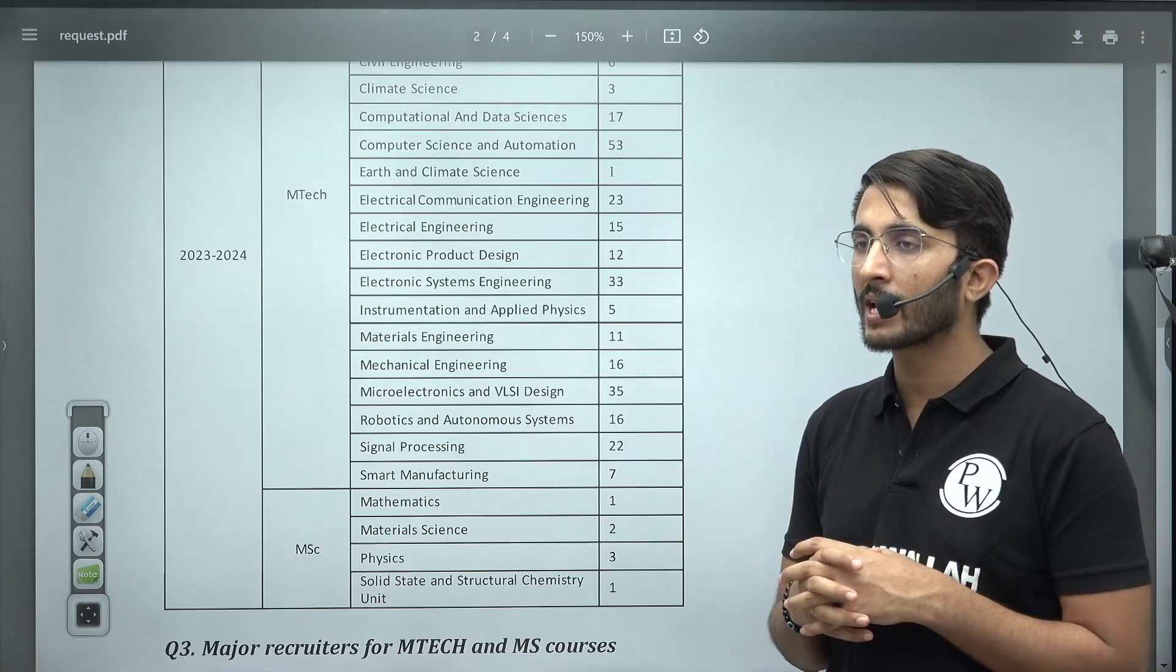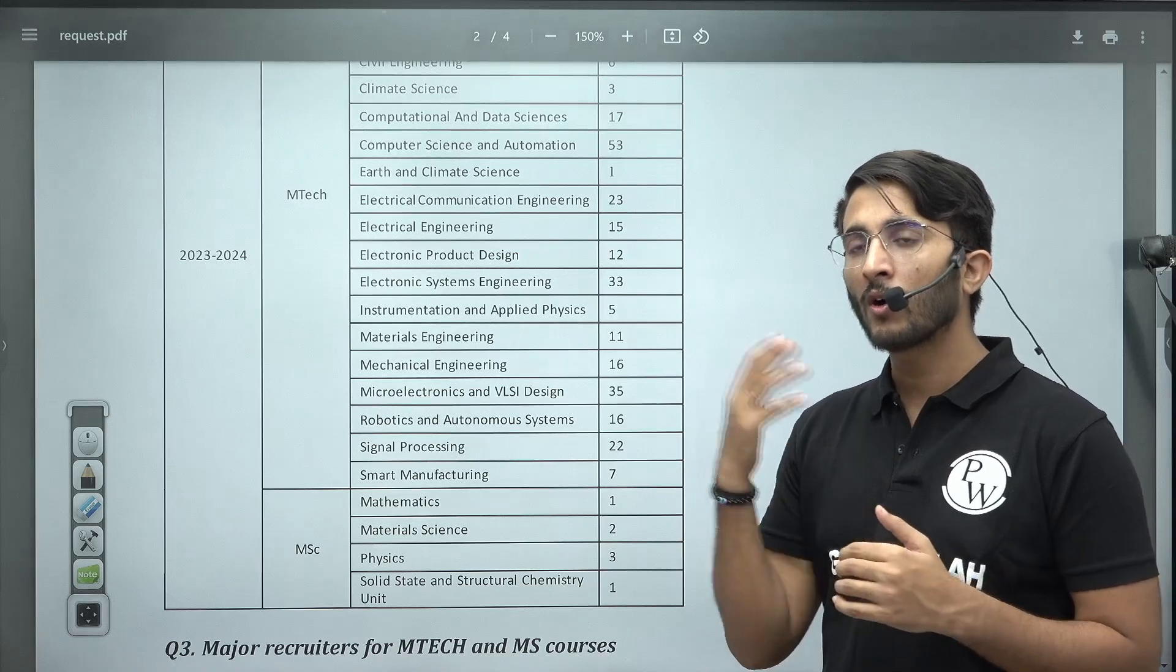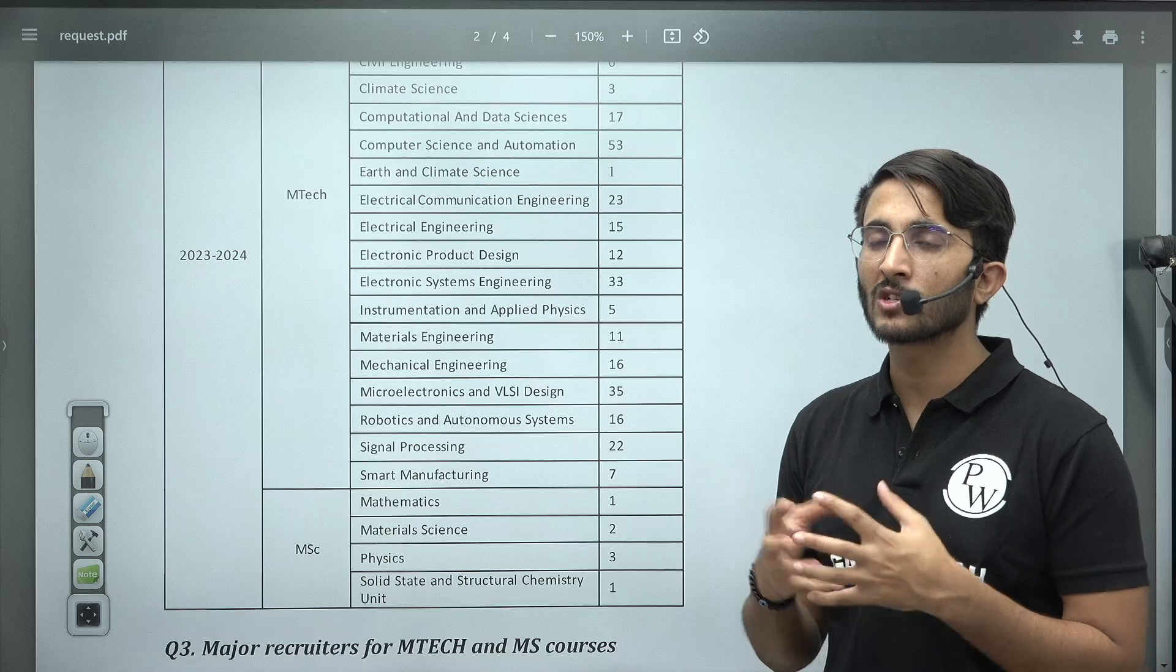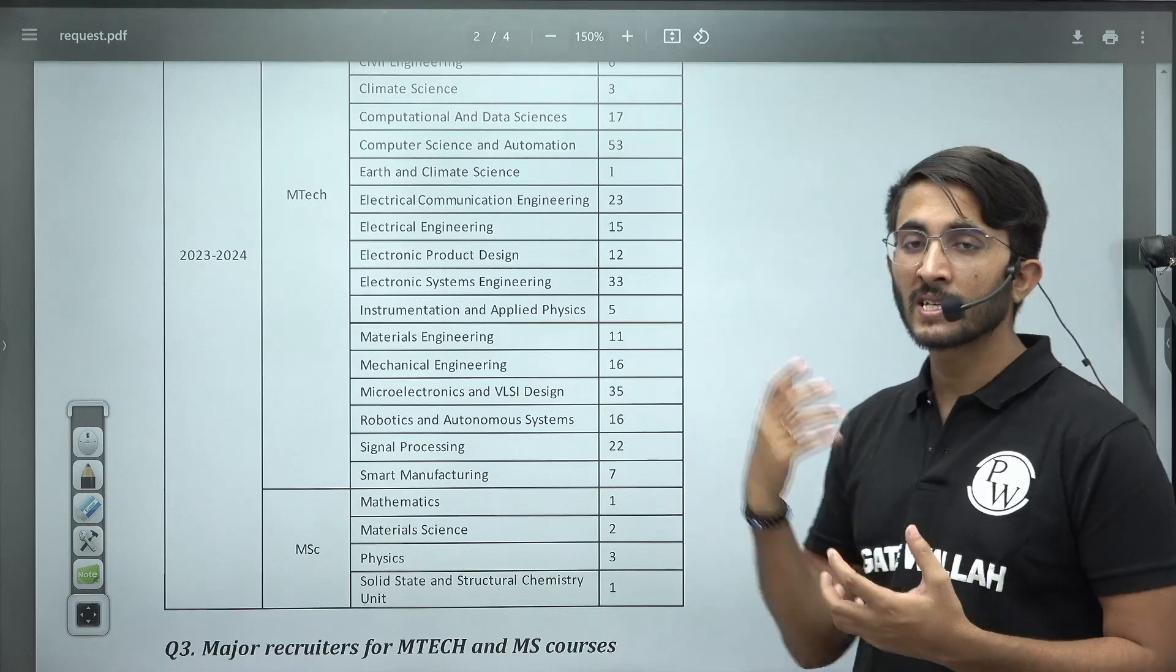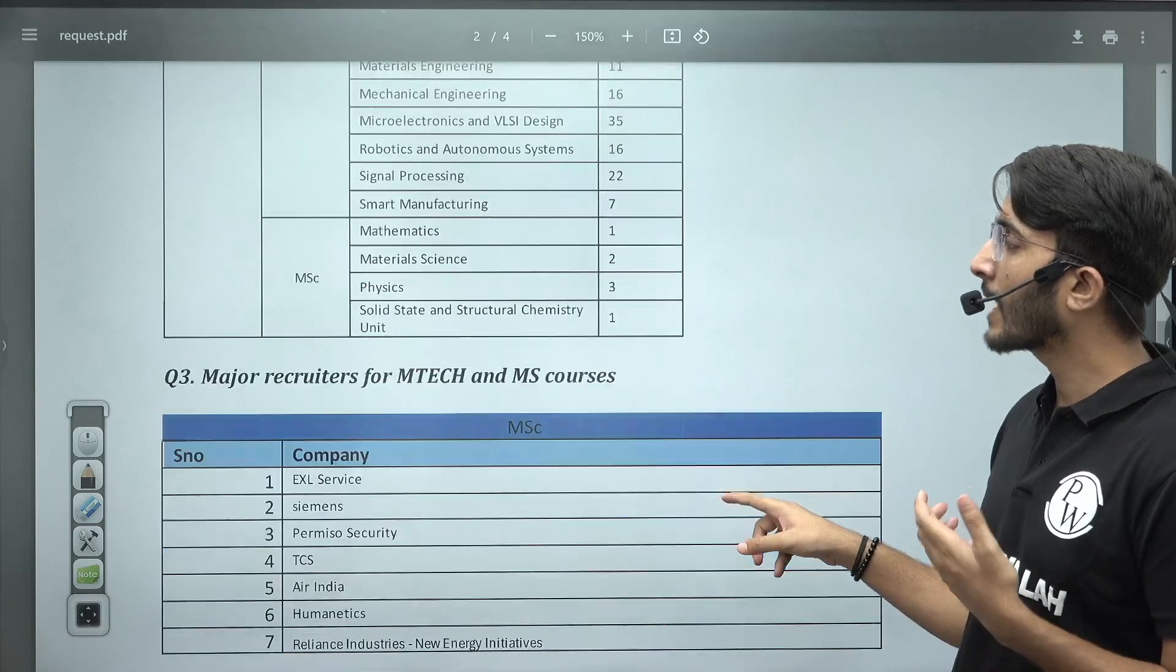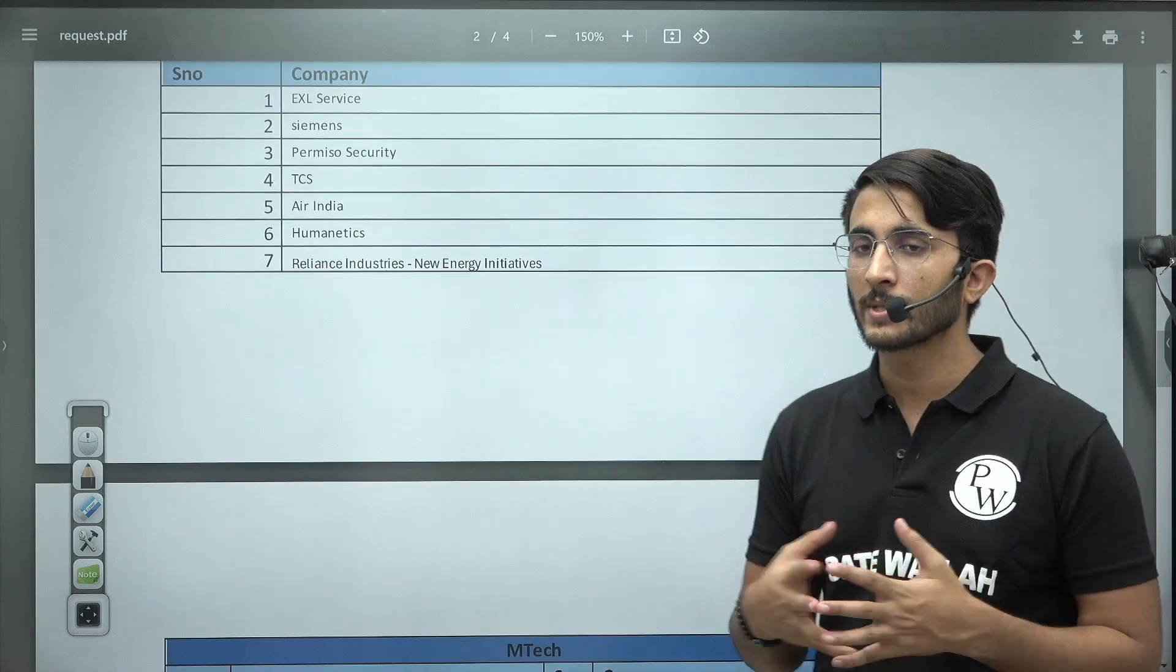So guys, not every student who is joining IISc for masters is taking part in M.Tech placement. Some students go abroad for different like higher study, PhD and all, so that's why the number is decided accordingly. And definitely guys, whoever has good CGPA and maintains their performance, they are able to get correct placement.